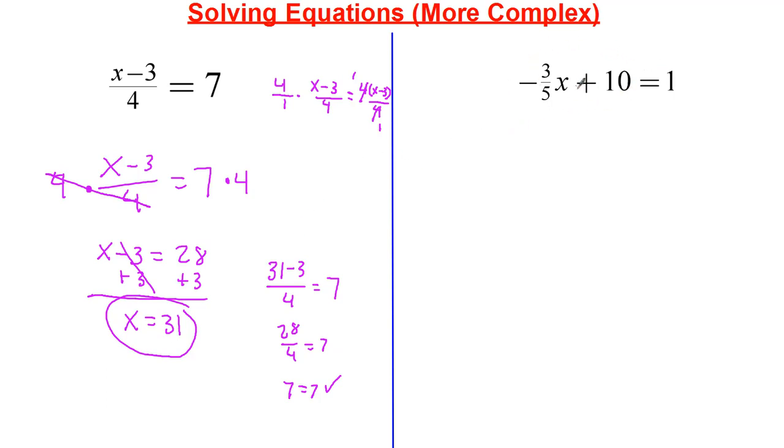Now, over here, I can just go ahead and do what I would normally do: get rid of the addition and subtraction. So minus 10 and then minus 10. Now I have negative 3 fifths of x is going to be equal to 1 minus 10, which is equal to negative 9.